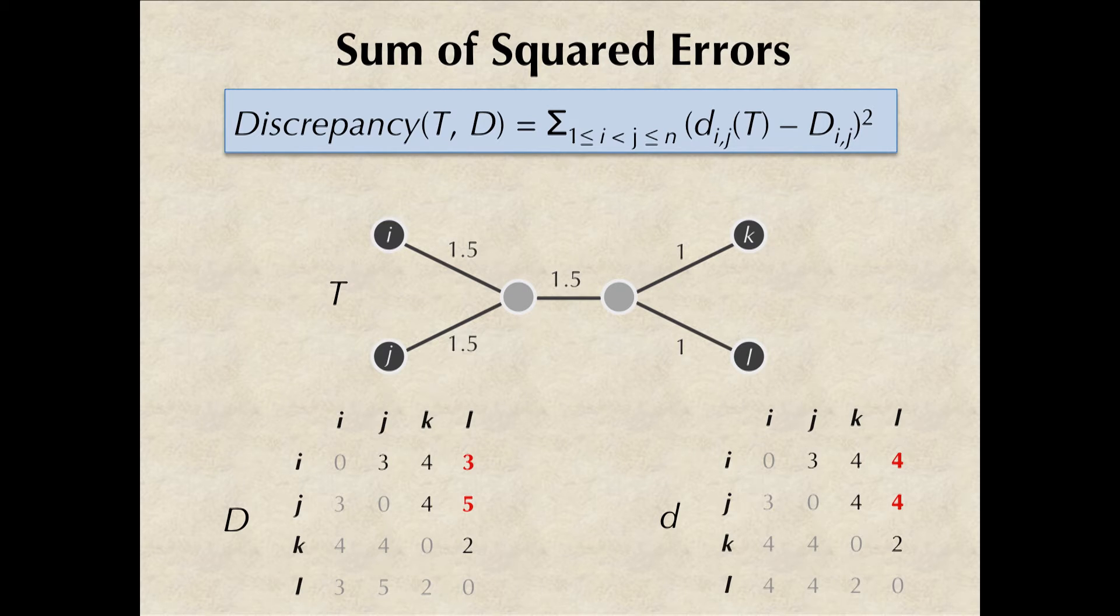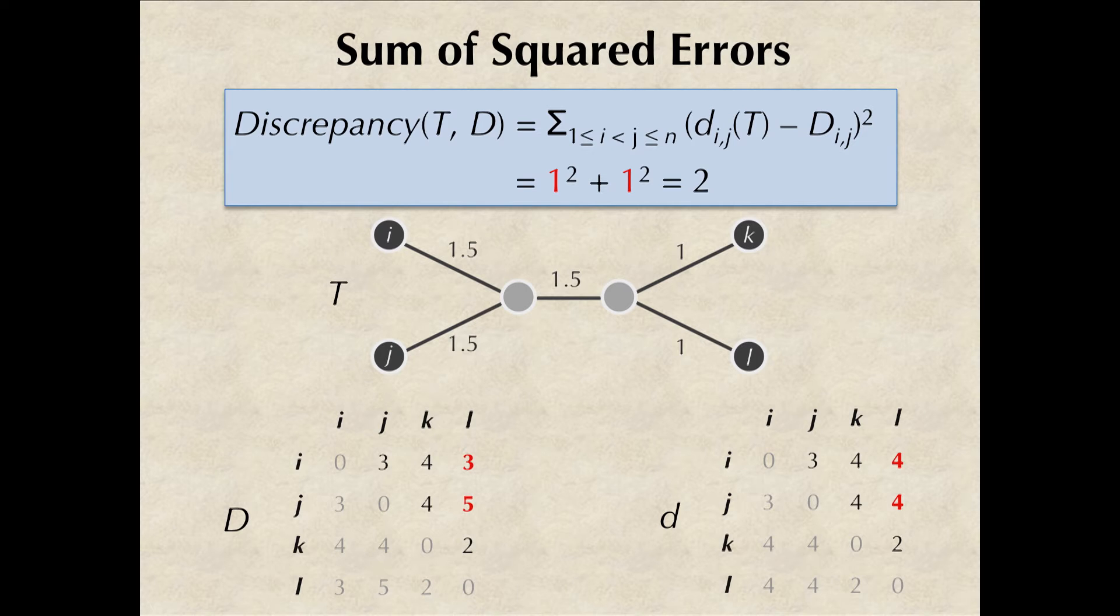So, to denote this sum of squared errors, we use the term discrepancy of T, D. Now, for this particular tree, there are only two non-zero errors, both of which are equal to 1, and so the discrepancy is equal to 2.